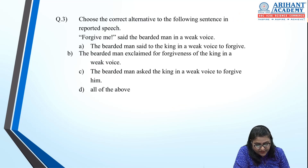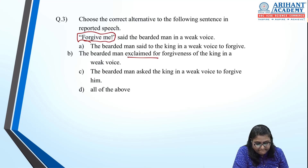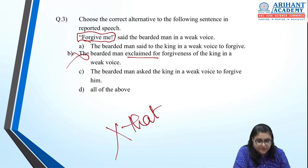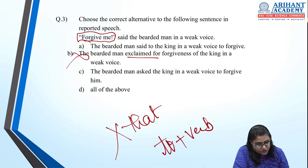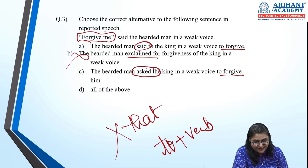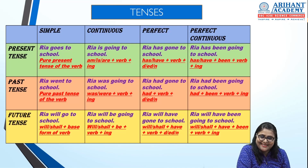'Forgive me,' said the bearded man in a weak voice. This is an imperative sentence, so we don't use 'said that' or 'told that.' Instead, we use 'to' plus verb. He is not just saying — he is asking for forgiveness. So 'the bearded man asked to forgive him' — option C, using 'asked', is correct.